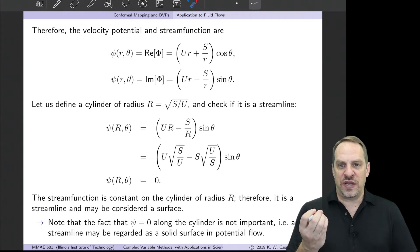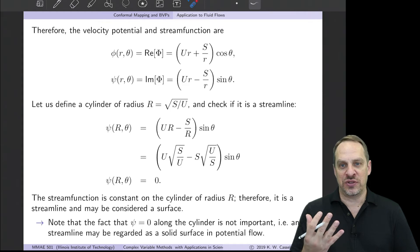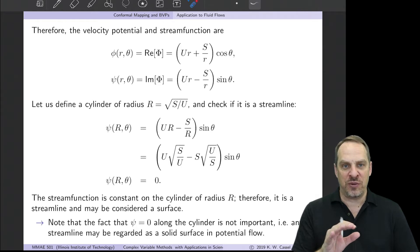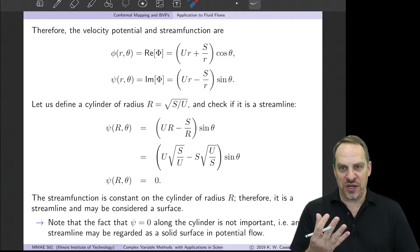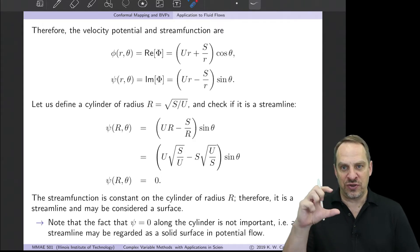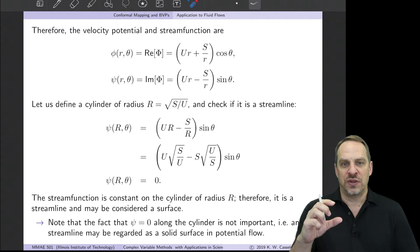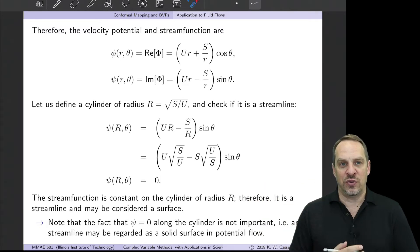Now the question we have to answer is: where is the circular cylinder? How do I know that this really is the flow around a circular cylinder? Remember what we said in the last video: any streamline in a potential flow problem, because the flow is inviscid, could be regarded as a solid surface. So I can look at the streamlines, and if I can find one that's circular, an exact circle, then I can regard that as the surface—that's my cylinder—and then I have the flow around the cylinder.